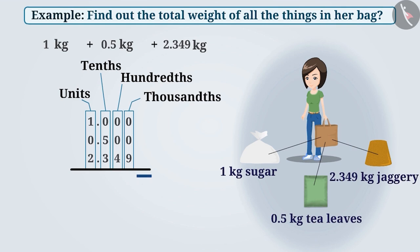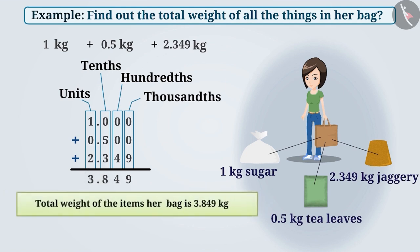The next step is adding the digits in each place from right to left. The sum of digits in the thousandths place is 9, the hundredths place is 4, the tenths place is 8, and the sum of digits in the units place is 3. Therefore, the total weight of the three items is 3.849. Thus, the total weight of her things in her bag is 3.849 kg.